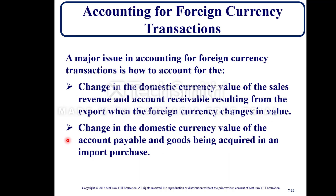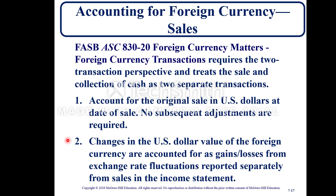A major issue in accounting for foreign currency transactions is how to account for the change in domestic currency value of sales revenue and accounts receivable from exports, and the change in accounts payable and goods acquired in import purchases. FASB ASC 830-20, Foreign Currency Matters, requires the two-transaction perspective, treating the sale and collection of cash as two separate transactions. The original sale is recorded in U.S. dollars at the date of sale with no subsequent adjustments, and changes in U.S. dollar value due to exchange rate fluctuations are reported separately as gains and losses in the income statement.